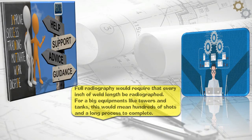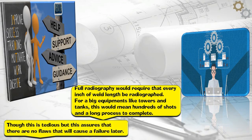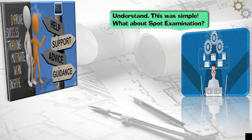Full radiography would require that every inch of weld length be radiographed. For big equipment like towers and tanks, this would mean hundreds of shots and a long process to complete. Though this is tedious, it assures that there are no flaws that will cause a failure later. Understood. This was simple.